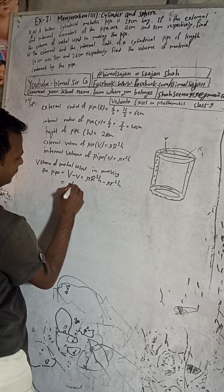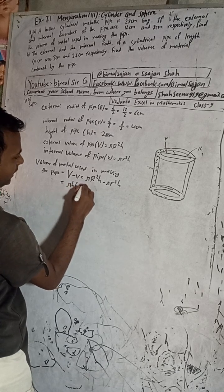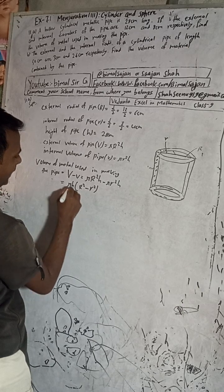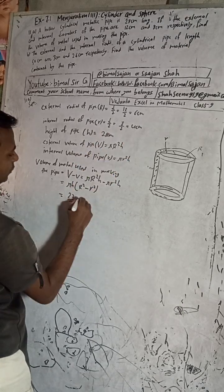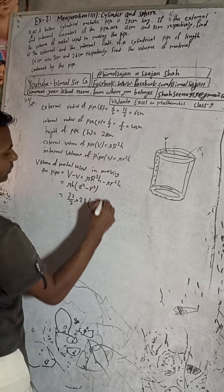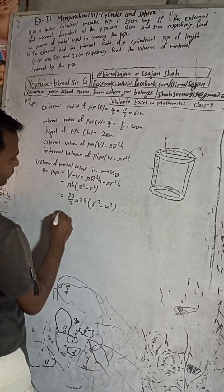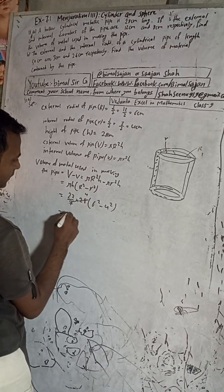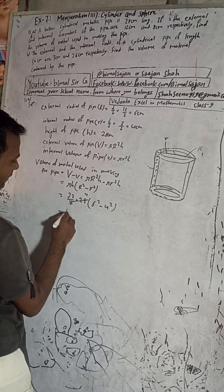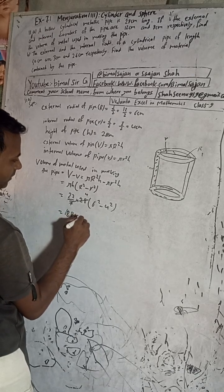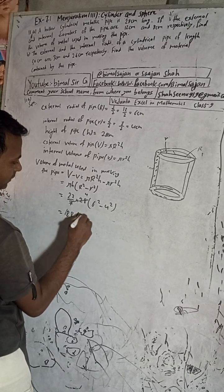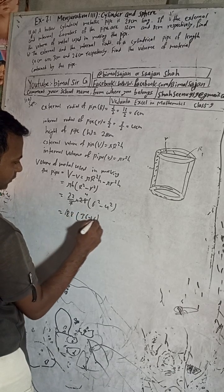Pi and h are common, so we take them out. We get pi h into (capital R squared minus small r squared). Pi value is 22 by 7, height is 28, so 7 cancels with 28 to give 4. That gives 22 times 4 equals 88. Now R is 6, so 6 squared is 36, and r is 4, so 4 squared is 16. So we have 88 into (36 minus 16) equals 88 into 20.